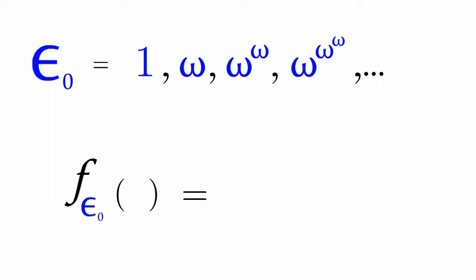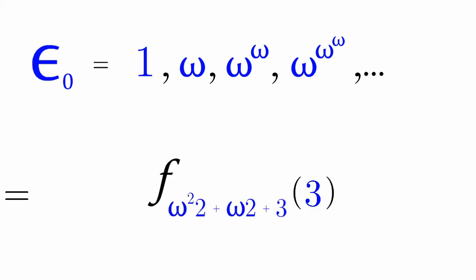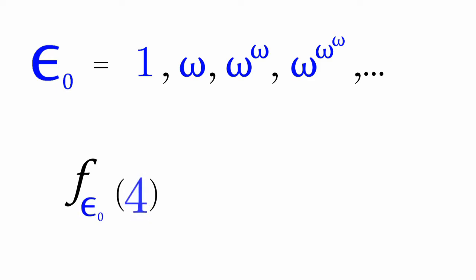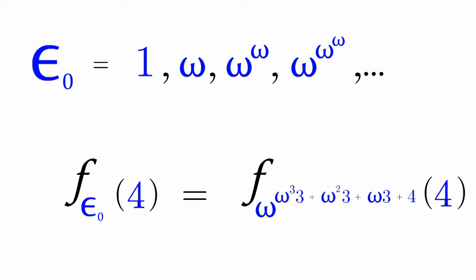But f_epsilon_naught of 3 turns into f_omega_to_the_omega of 3. This turns into f_omega_cubed of 3, which we've seen in our previous video, and expands to quite a large expression. But f_epsilon_naught of 4 is equal to f_omega_to_the_omega_to_the_omega of 4. The uppermost omega gets diagonalized into 4, and then omega to the 4th expands to an even bigger expression, as we've known from our previous video.